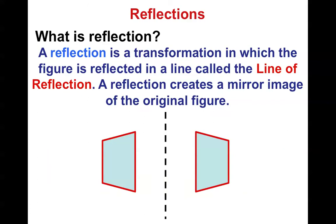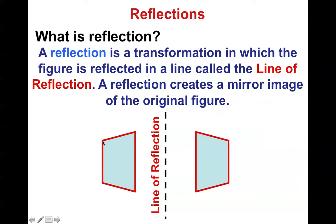Here's an example. Notice this line down the middle is the line of reflection. This is the exact same object, only it's reflected in the line. Notice the long side of the trapezoid is close to the line of reflection, and the short side of the trapezoid is far away from the line of reflection.